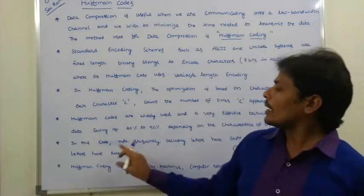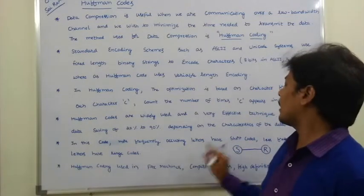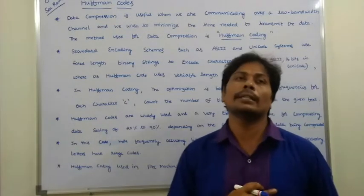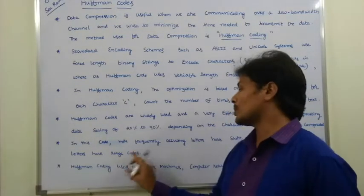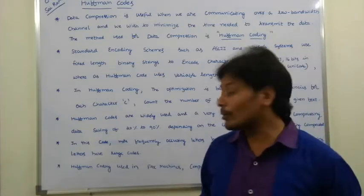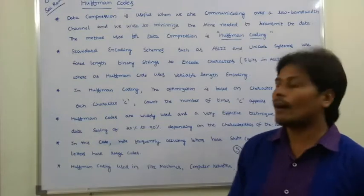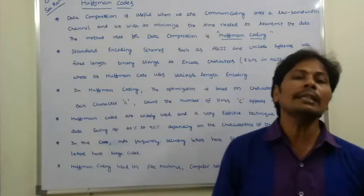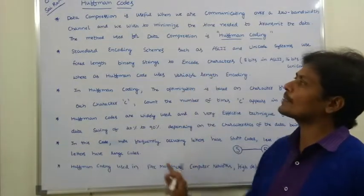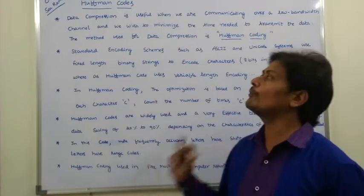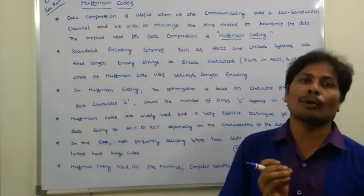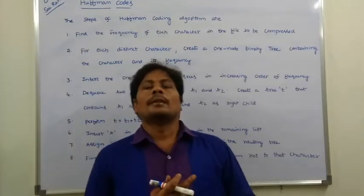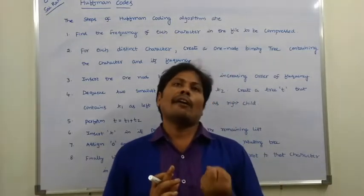In Huffman coding, more frequently occurring characters get short code words and less frequently occurring characters get larger code words. Huffman coding is used in fax transmissions, computer networks, high-definition televisions, and modems. Next, we look at how to solve a problem using Huffman coding and what are the main steps.